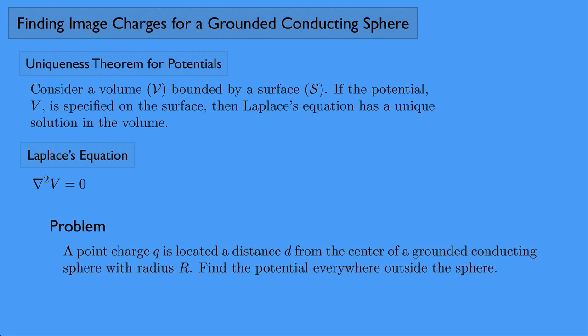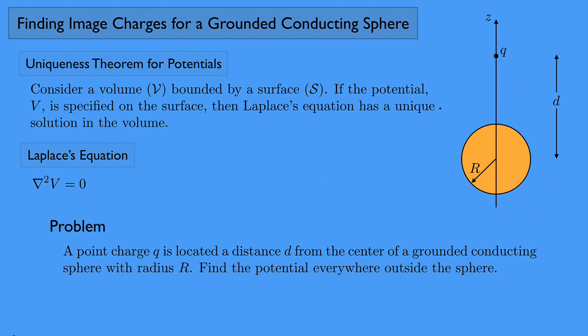Here's the problem: a point charge Q is located a distance d from the center of a grounded conducting sphere with a radius of R. Find the potential everywhere outside the sphere. Here's our sphere with radius R, aligned along the z-axis, with point charge Q a distance d away from the center. We want to find the potential everywhere outside the sphere.